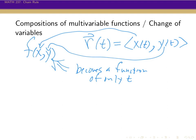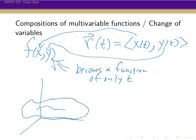So geometrically, what's going on here? f of x, y is drawing out some surface in 3-space, and r of t is drawing out some curve on the xy-plane. When we plug the coordinates of this curve into the function, what we're getting is a sort of slice — we're writing f of r(t), but really this is plugging in x(t) for x and y(t) for y. We get the slice of the function happening above the curve.